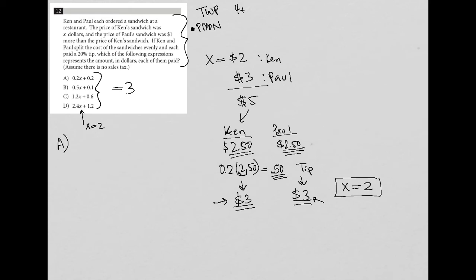So let's try answer choice A. Answer choice A says 0.2 times X, but I'm going to say that's times two plus 0.2. 0.2 times two is 0.4. This is definitely not going to equal three. So choice A is out.